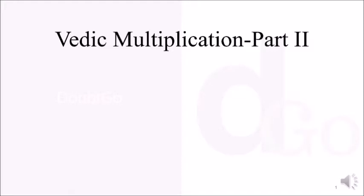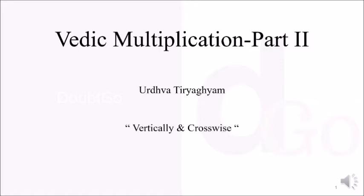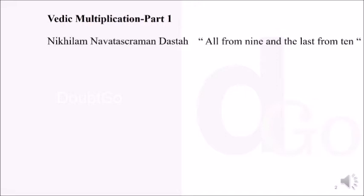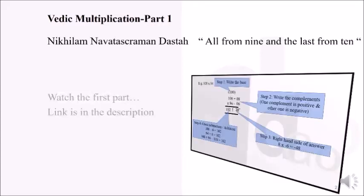Hello guys, welcome to DAWDGO. In this part 2 of the video, we will discuss Urdhav Tiriagyam, which translates as vertically and crosswise. In the first part, we discussed all from 9 and the last from 10, which can be used if one of the numbers multiplied is close to a base of 10, 100, or 1000 etc. If you haven't watched the first part, I strongly recommend that you watch it and then come back — the links are in the description. The method all from 9 and the last from 10 is a sub-method of the vertically and crosswise.